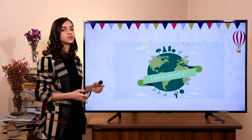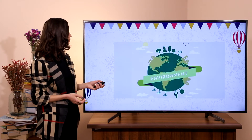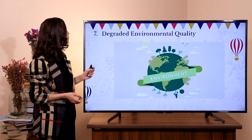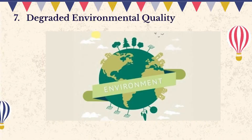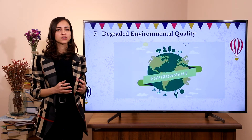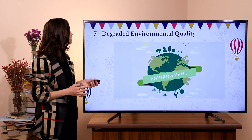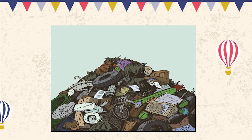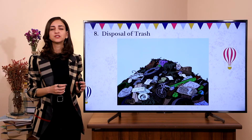Next problem. What do you understand from the picture? Degraded environmental quality is the problem nowadays. And look at the next picture — what's the problem? The problem is the disposal of trash. Trash accumulations need to be eliminated.